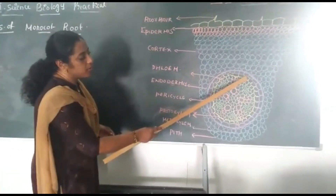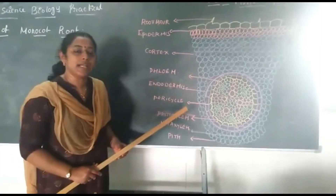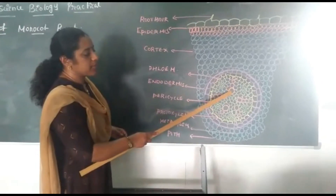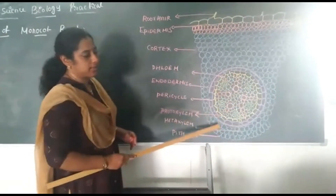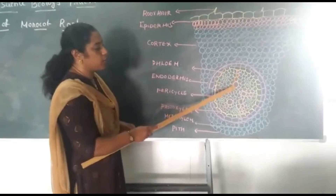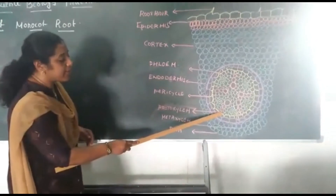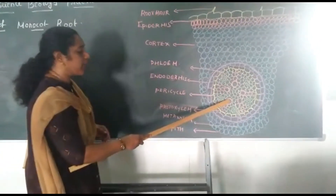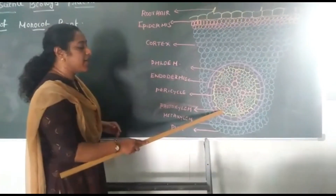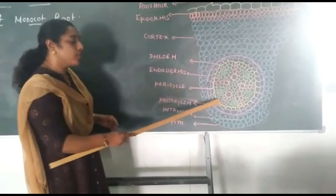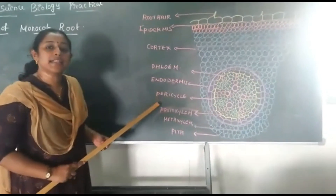Below the Pericycle you can find the vascular tissue system. The vascular tissue system consists of both Xylem and Phloem. The pink color circular structures are the Xylem. Normally in Monocot root you can find many Xylem bundles. Xylem consists of both Protoxylem and Metaxylem. Protoxylem is normally small in size and Metaxylem is bigger. Protoxylem is arranged towards the periphery, and such an arrangement is called exarch arrangement.